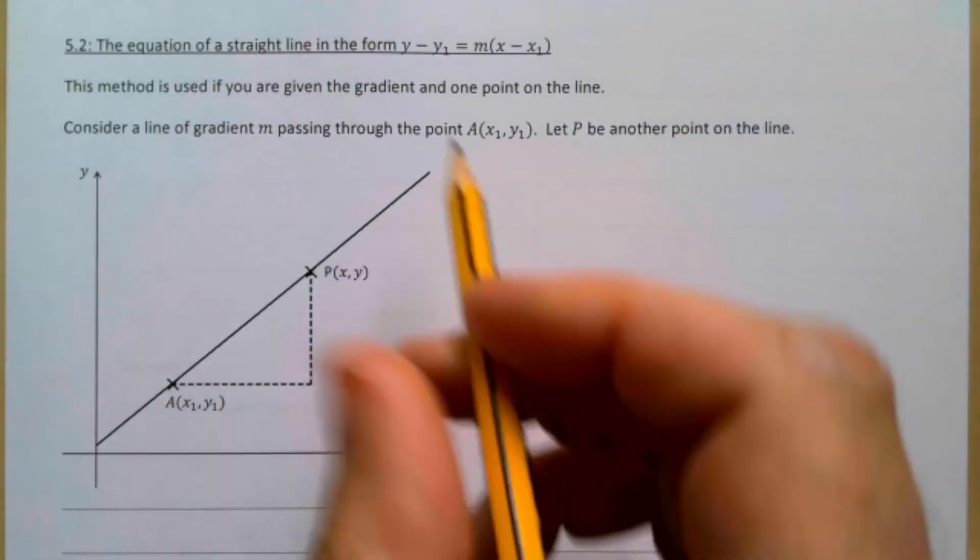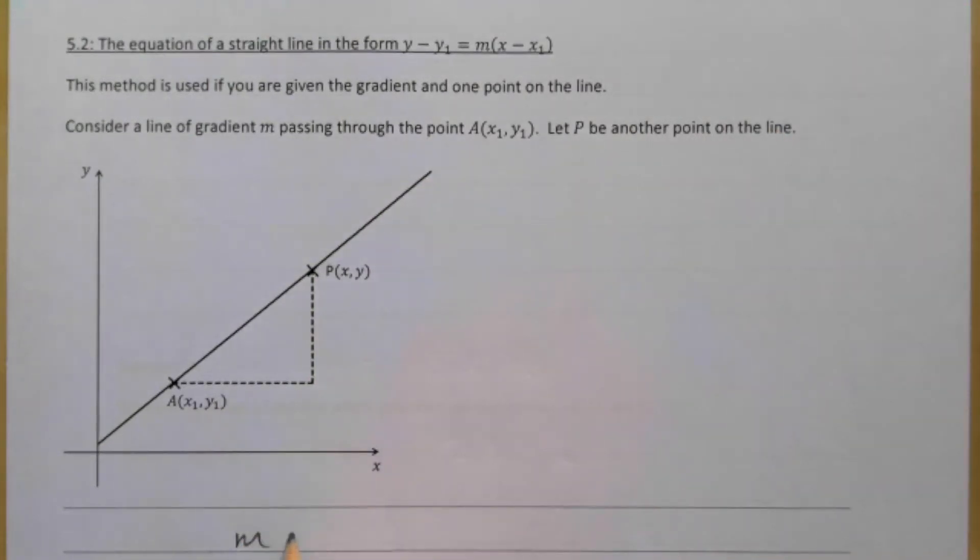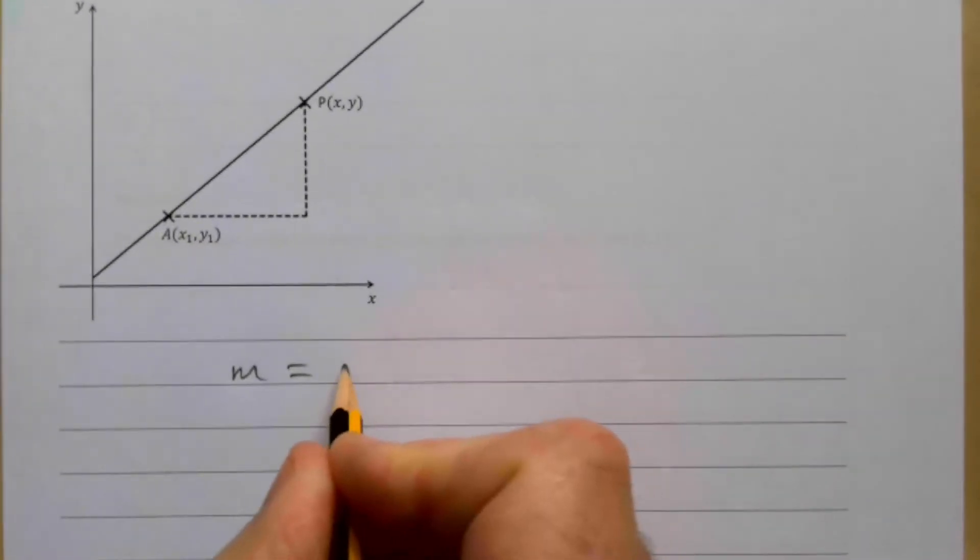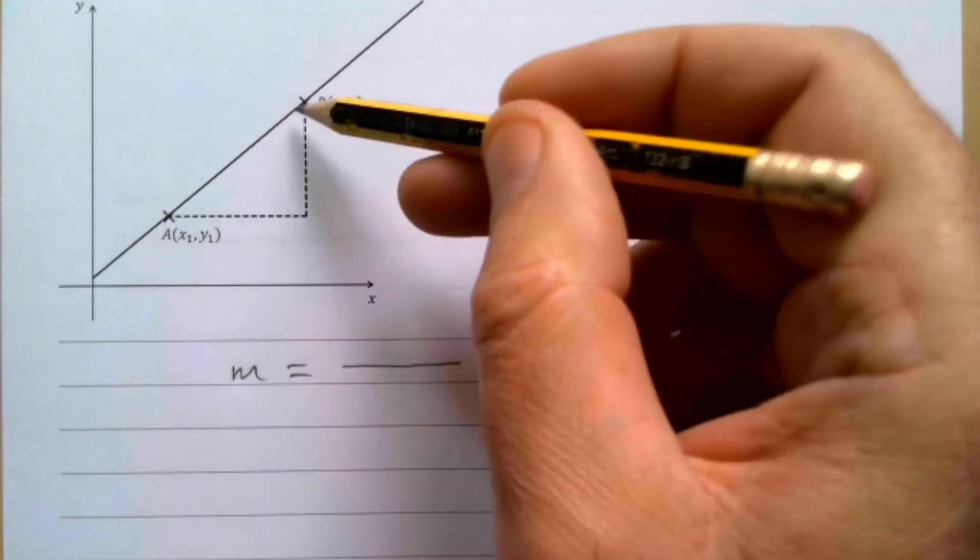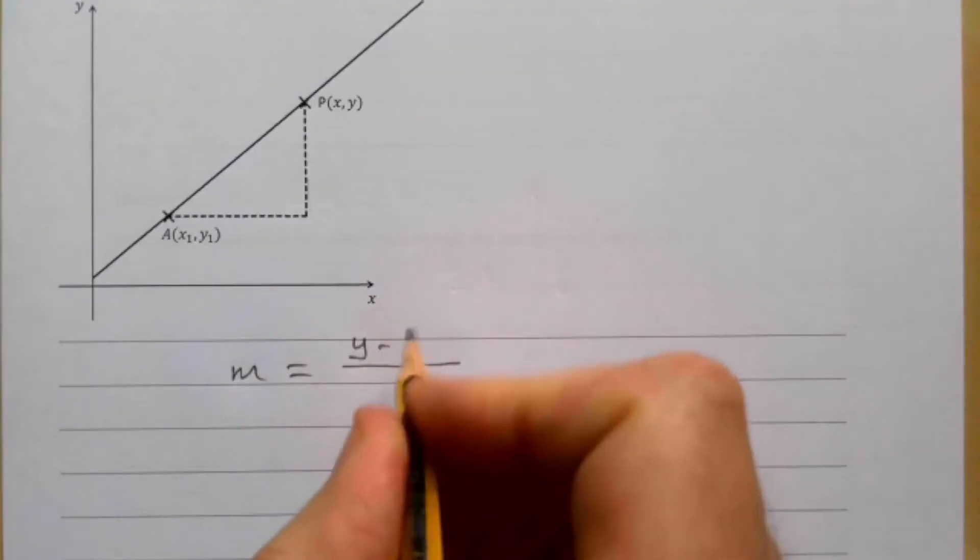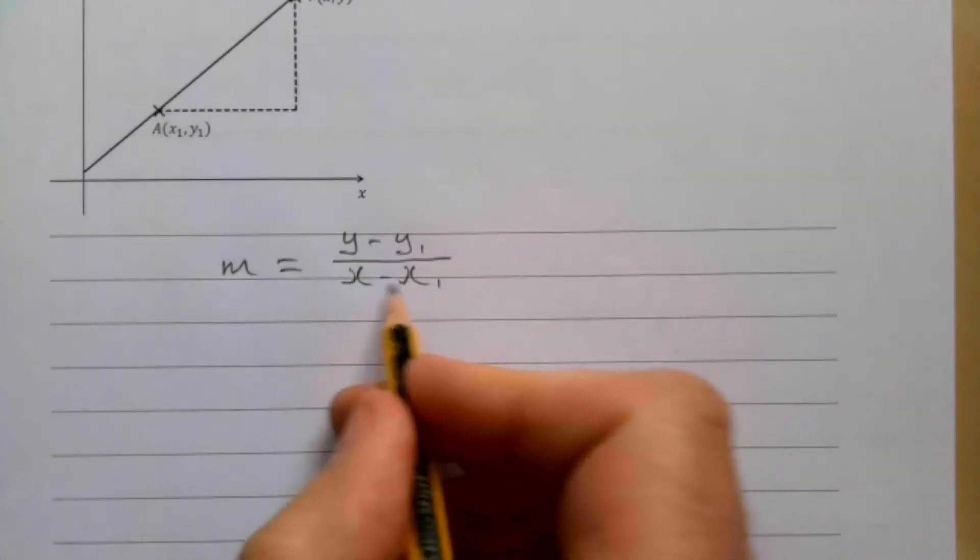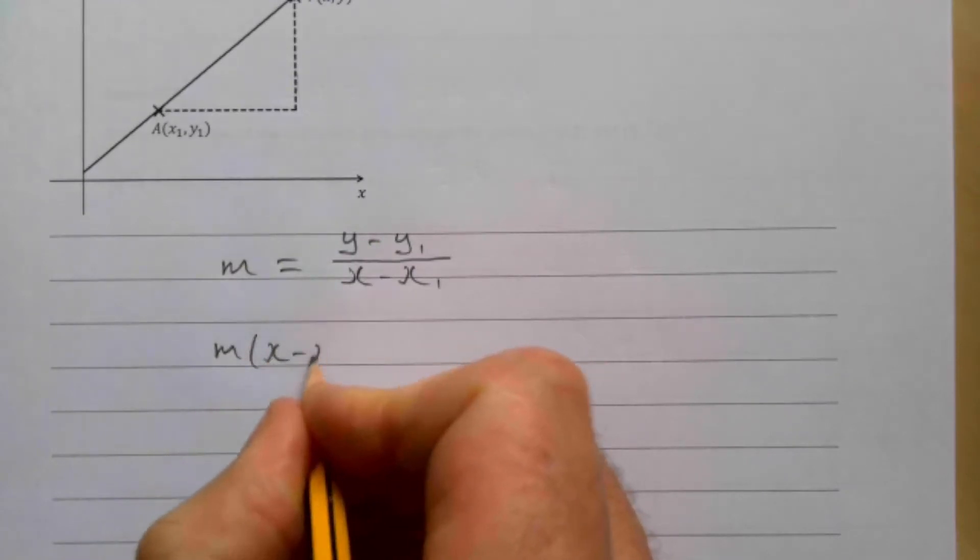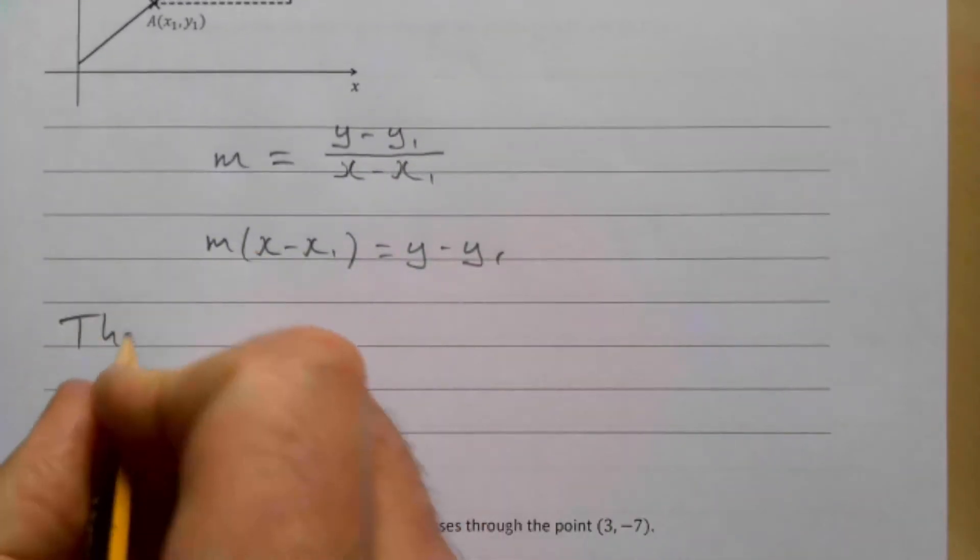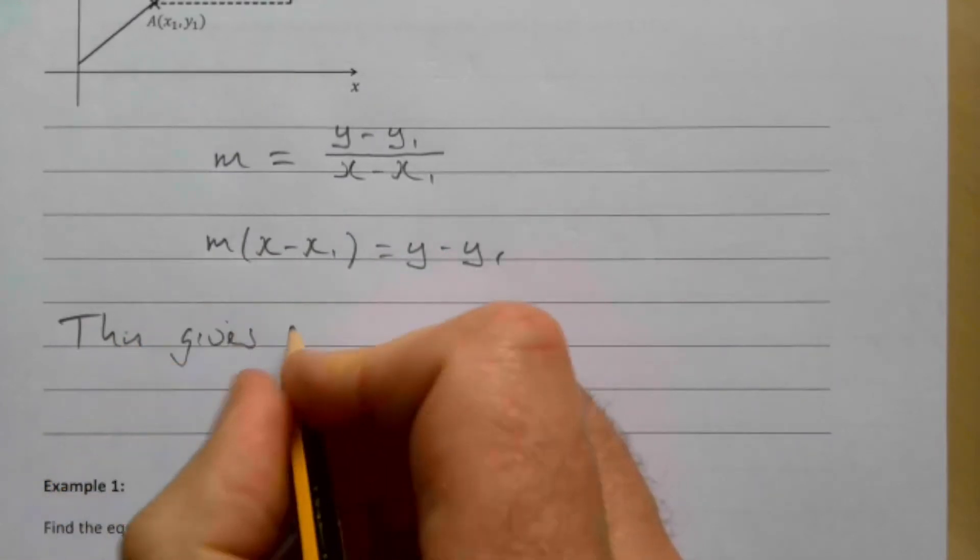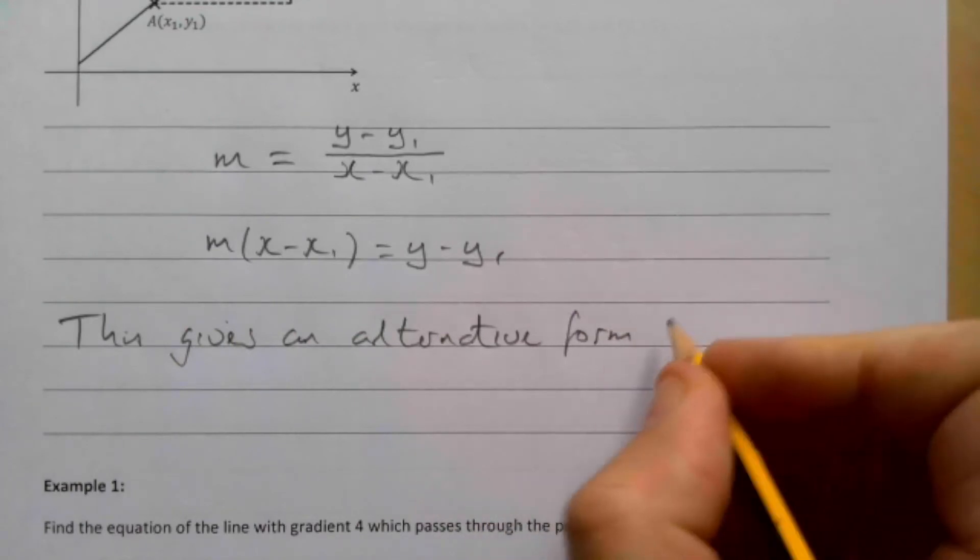Consider a line gradient m passing through the point (x1, y1). Let p be another point on the line. The gradient then would be... Let's move this up slightly so you can see it. It's going to be the difference in the y-coordinate. So the y-coordinate of this one is y. The y-coordinate of this one is y1. So this distance is y - y1. X-coordinates then, similarly, x - x1. If we multiply through by our bottom line, we get m(x - x1) = y - y1. And then, just as we've said above,